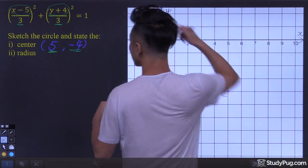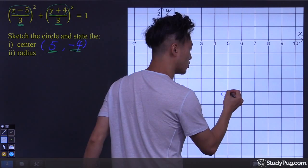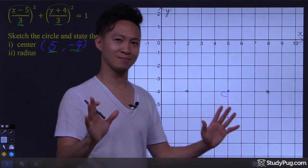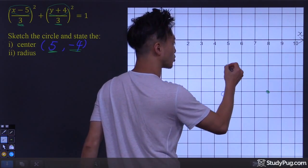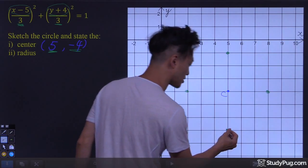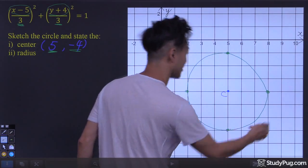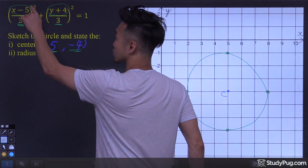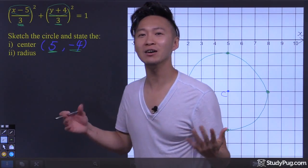With the same values at the denominator, we now have a circle. From the center in the x-direction, we're going to move three units in either direction — three units to the right, and three units to the left. In the y-direction, we're also going to move three units in either direction — three units up and three units down. Connect the four outer points with a smooth curve, and we now have a beautiful circle. In conclusion, when we see the sum of squares in a conic form with the same value at the denominator, we have a circle.